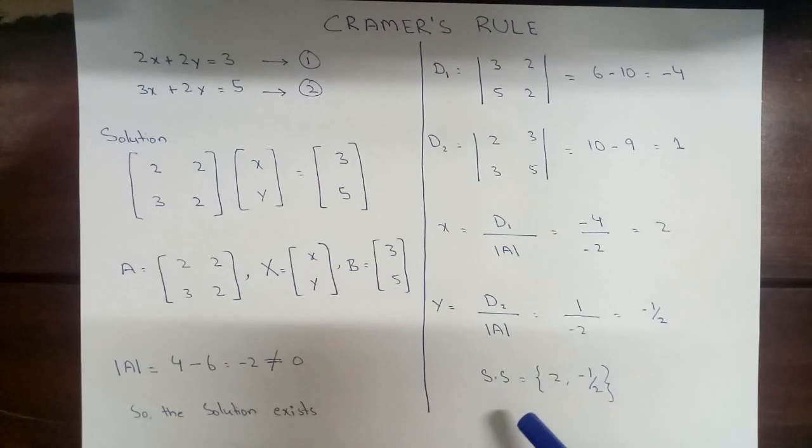So we will write the solution set and put the values of x and y, that is 2 comma minus 1 upon 2. In this way, we can solve the system of two linear equations using Cramer's rule. Thank you for watching this video.